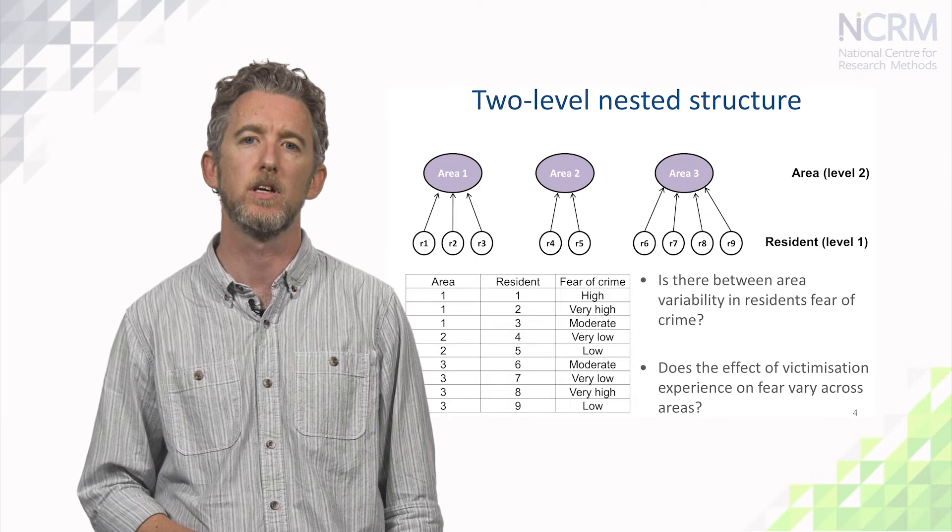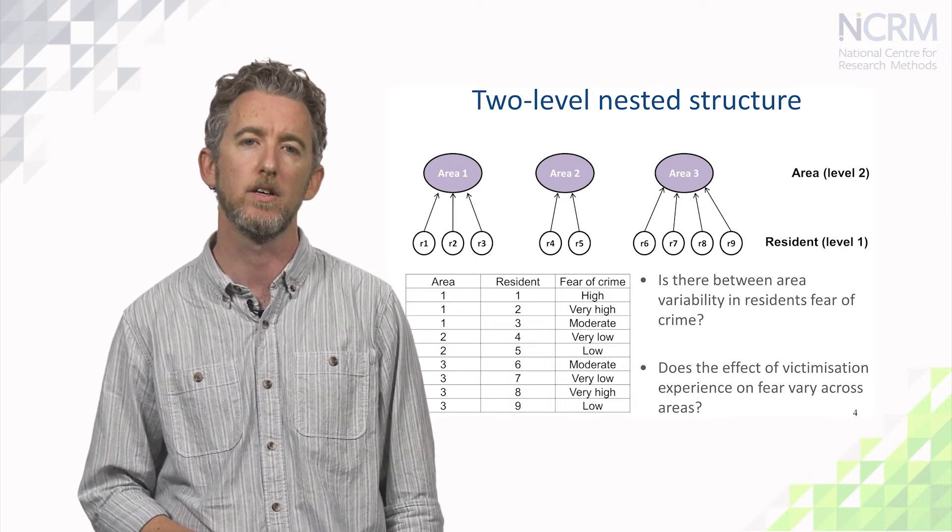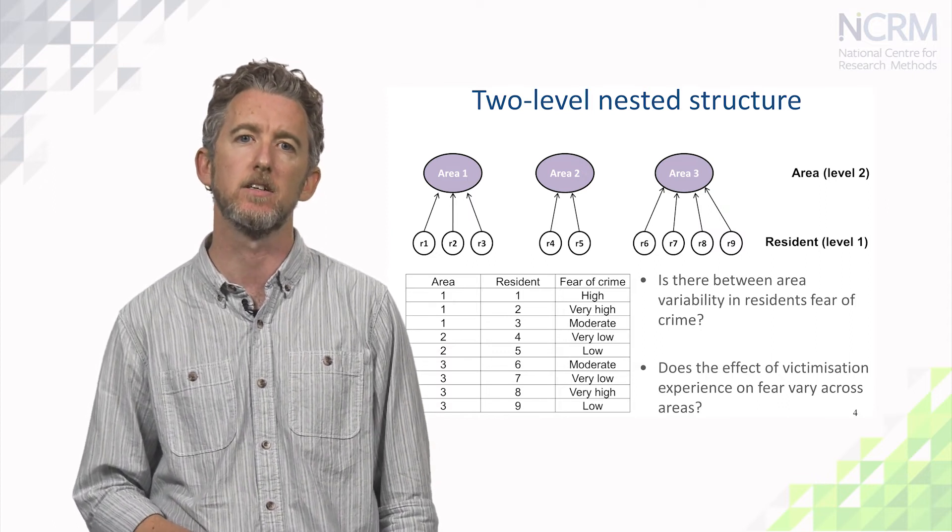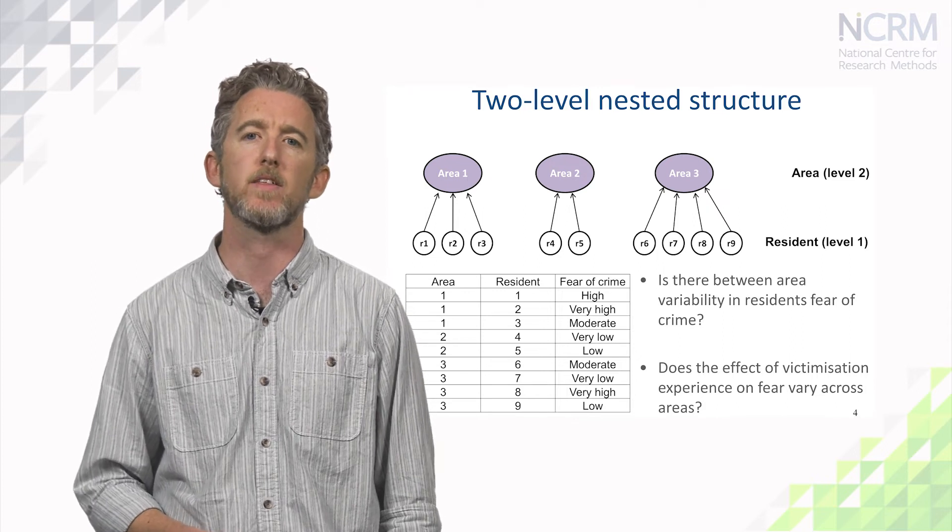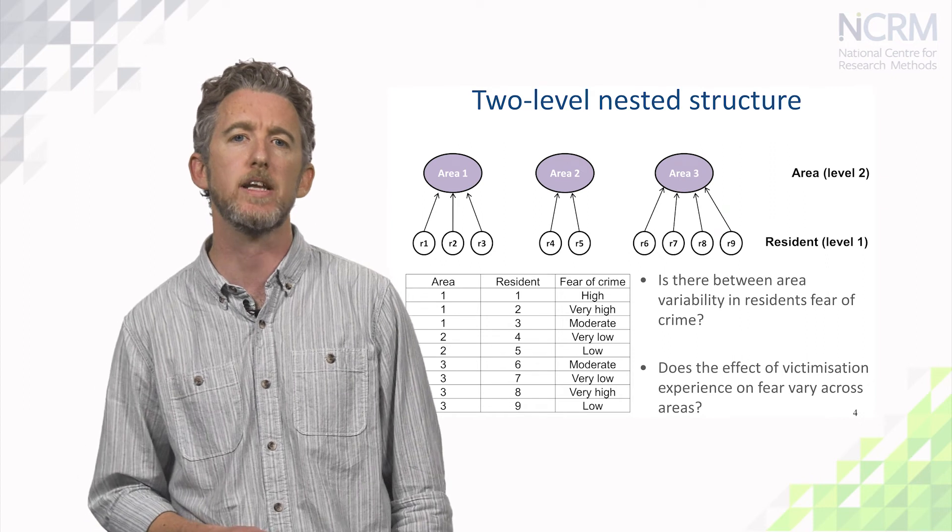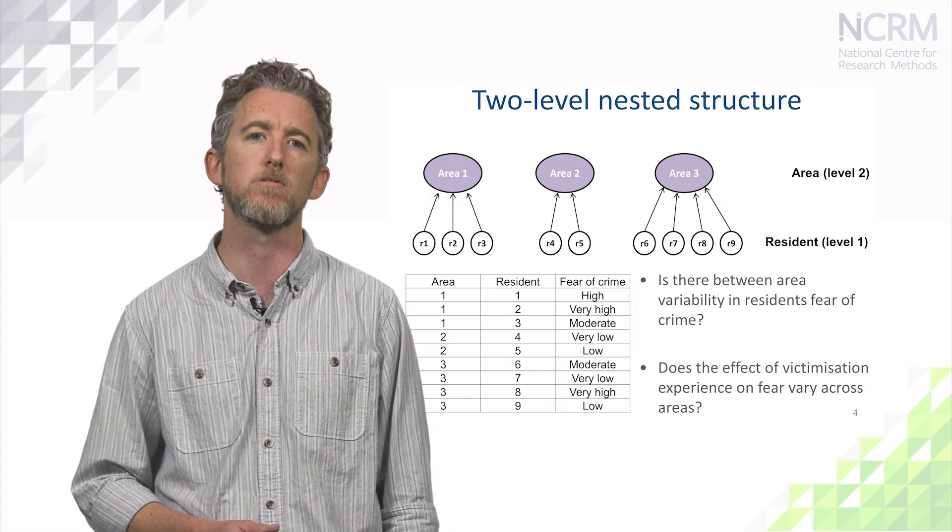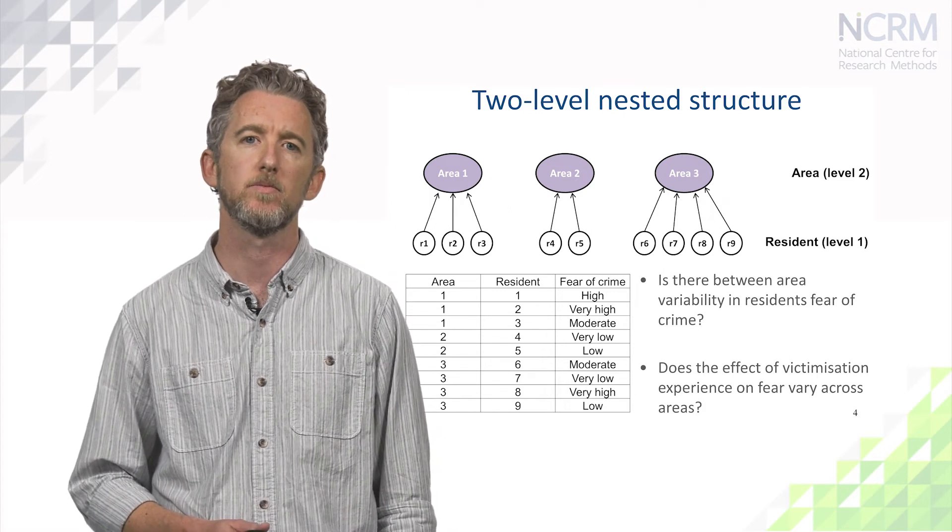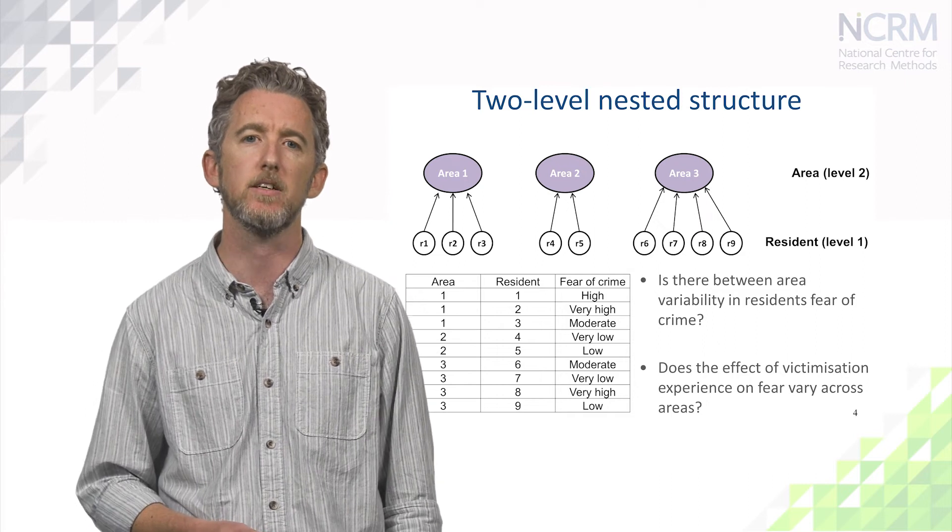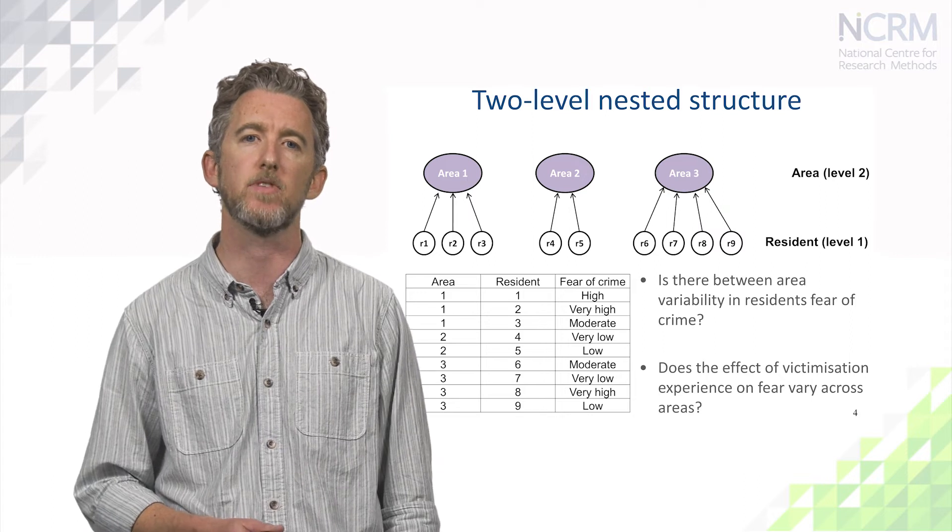Take fear of crime, for example. Here we can see that scores for fear of crime tend to be higher in area one, lower in area two and more varied in area three. We may want to know systematically whether there are differences in fear of crime between all neighbourhoods in addition to any observed differences between residents, and exactly how much of the variation is to do with groups. And we may also want to understand whether individual differences in fear, for example, between those who have been a victim of crime and those who haven't, are shaped by features of the area.